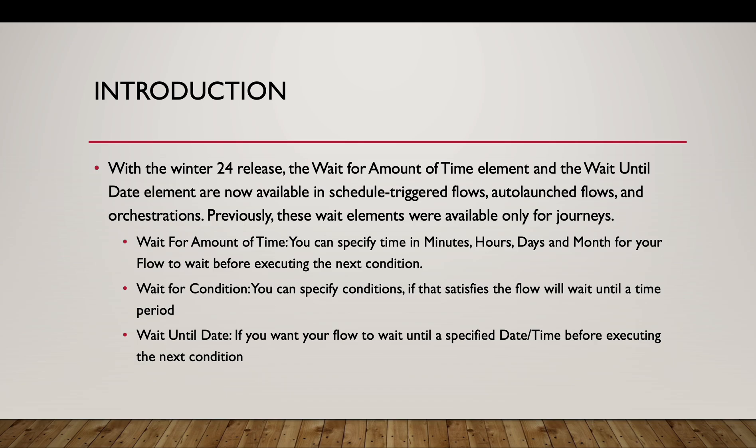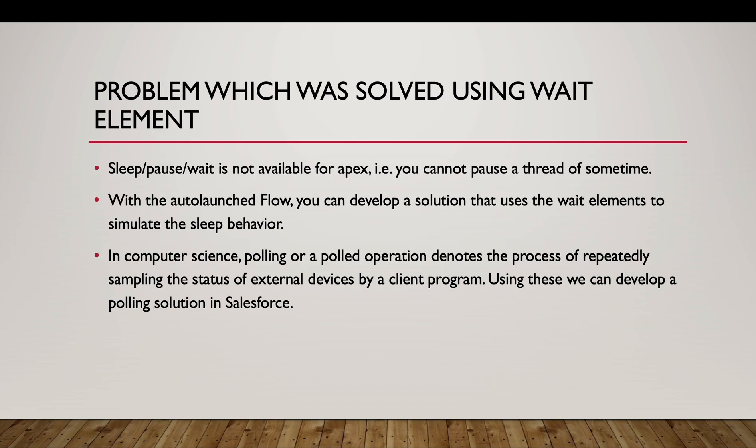With Wait for Amount of Time, we can specify the time in minutes, hours, days, and months for the flow to wait before executing the next condition. With Wait for Condition, we can input our conditions, and if that is satisfied, the flow will wait until a specific time period which we can define in the flow. With the Wait Until Date element, if we want our flow to wait until a specified date and time before executing the next condition, we can use this.